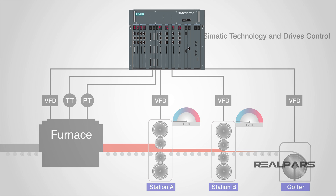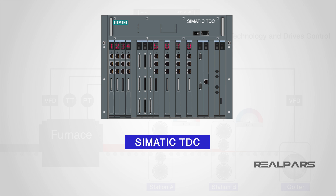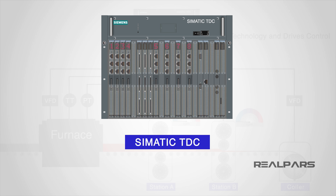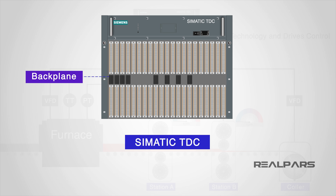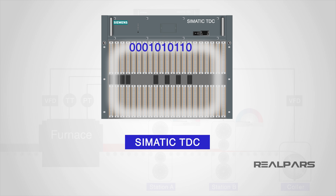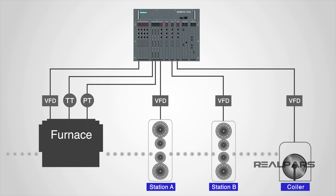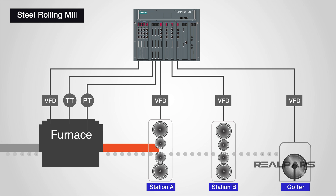So what have we learned today? SIMATIC TDC is a high-performance, high-precision PLC system that allows multiple processors to be mounted in the same rack. This means each PLC controller is connected by the backplane of the rack, so data can be transferred extremely quickly between controllers handling different parts of the plant. SIMATIC TDC systems are powerful motion and closed-loop control systems with a modular design, making them highly scalable to handle small to very large applications. Typically, they are used in large-scale plant environments such as a steel rolling mill, because the complexity of rolling steel means it passes through a number of stations before reaching the end product.